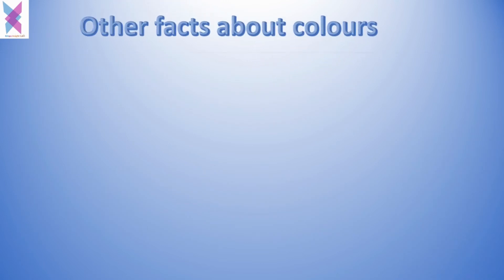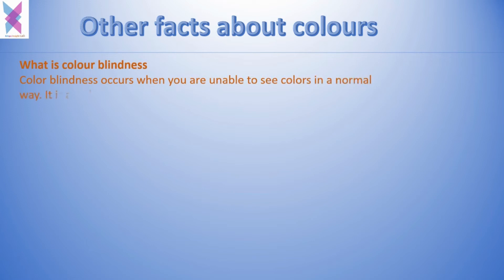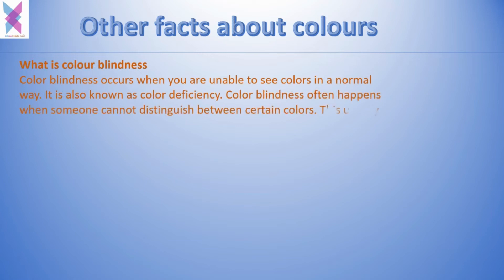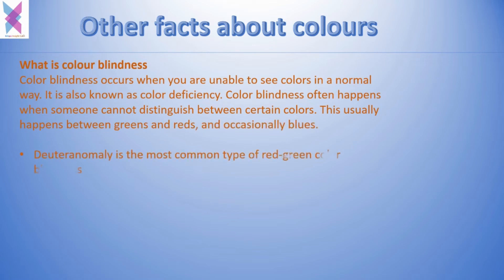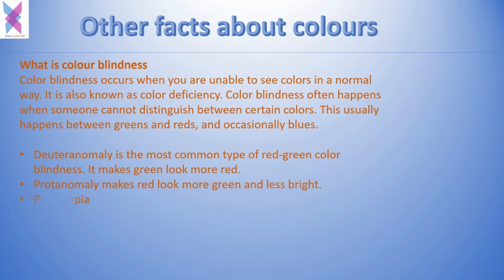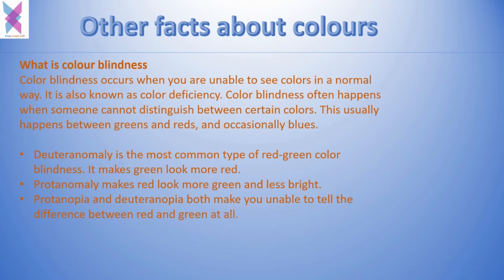Color blindness occurs when you are unable to see colors in a normal way. It is also known as color deficiency, and it often happens when someone cannot distinguish between certain colors — this usually happens between green and red, and occasionally blues as well. Deuteranomaly is the most common type of red-green color blindness — it makes green look more red. Protanomaly makes red look lighter and less bright. Protanopia and deuteranopia both make you unable to tell the difference between red and green at all.